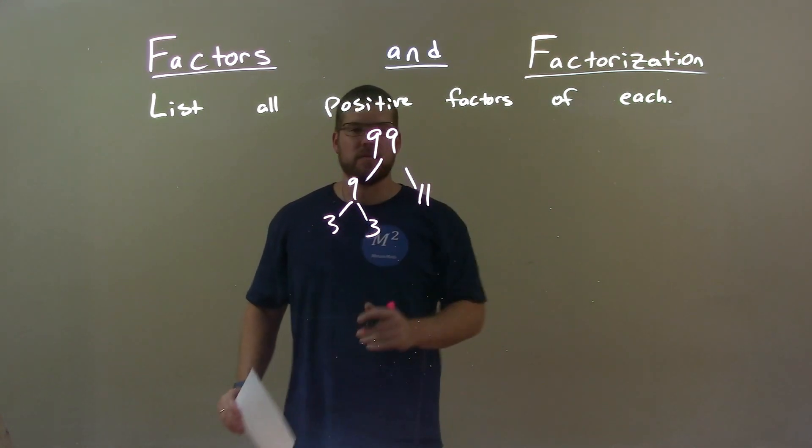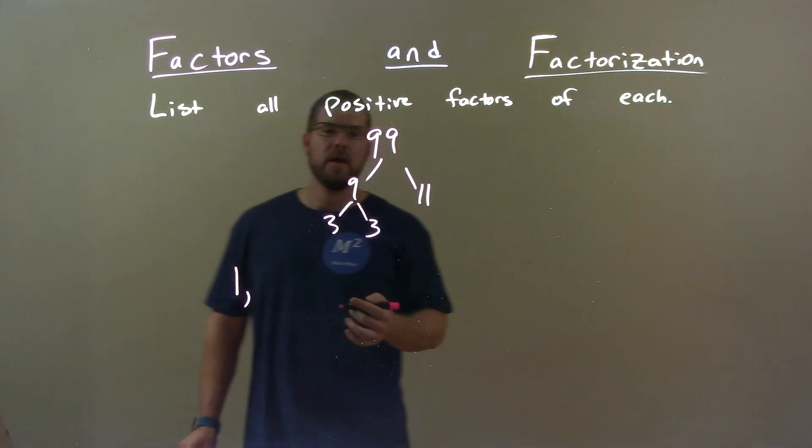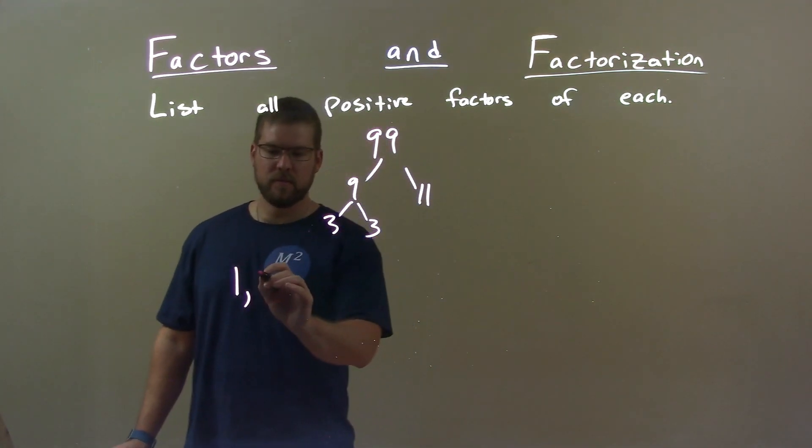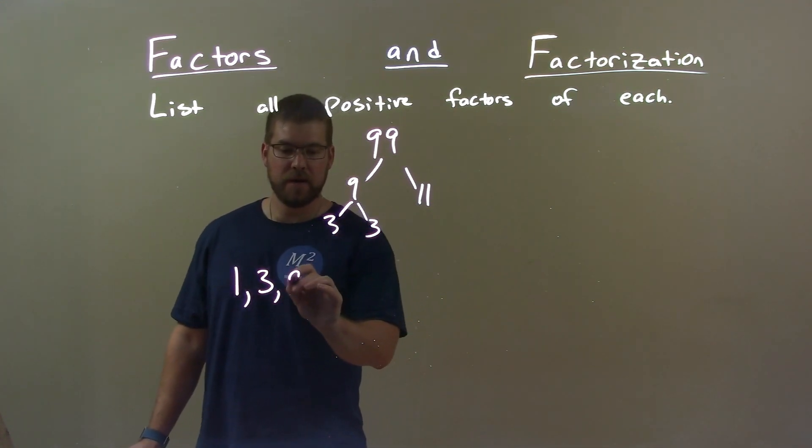So let's get a list of positive factors. 1 will always be a positive factor here. Now on the list, 3 is the next largest number there and then we start multiplying these to get our next numbers. 3 times 3 gave us 9.